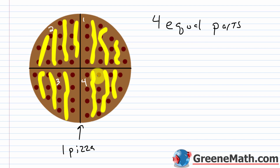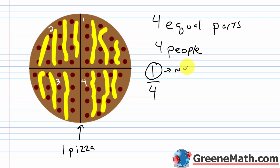Let's suppose that three of your buddies come over to the house and there's a total of four people. In the interest of fairness, we're going to make sure that each person gets the same amount of pizza. So everybody's going to get one slice out of a total of four equal slices — each person would get one fourth of the pizza. The one is called the numerator. It's the top part of a fraction, and it tells us the number of parts being discussed or used. Since each person is getting one part, or one slice, the numerator is one.